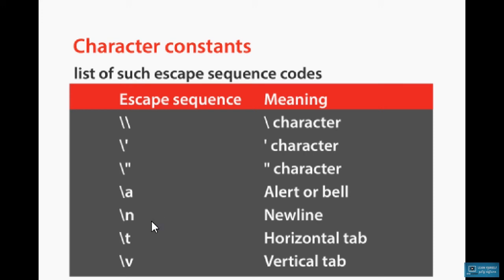\a is the bell sound. \n is the new line. \t is the horizontal tab — that is 5 spaces automatically, which is the horizontal space. \v is the vertical space — that is the vertical tab.